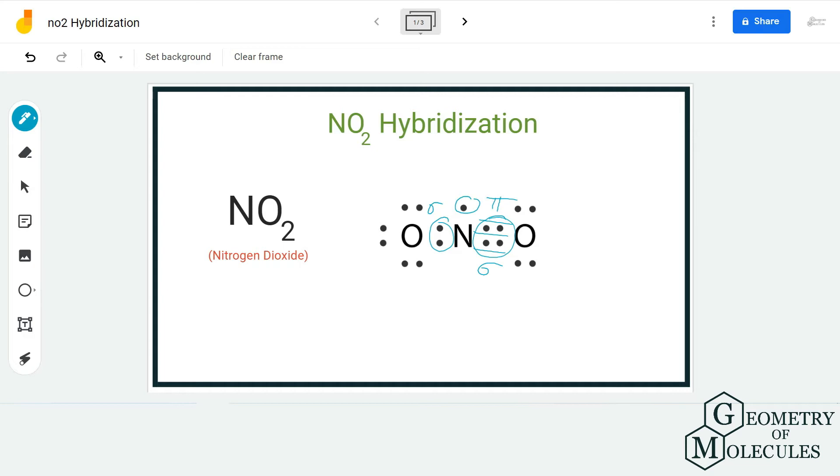For steric number, we consider all the electrons that are forming bonds and the ones that are not forming bonds on the central atom. So here, if you see, there are two bonding pairs of electrons on the nitrogen atom.